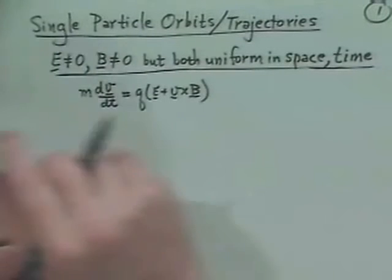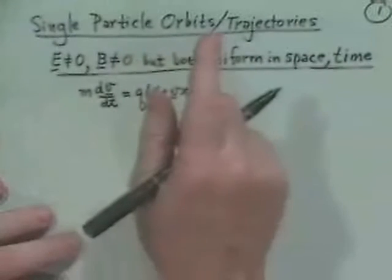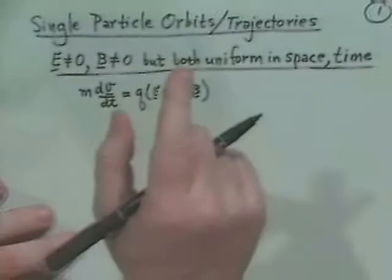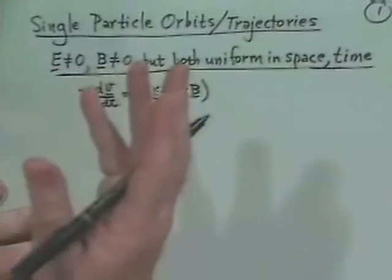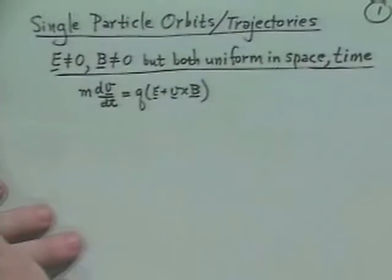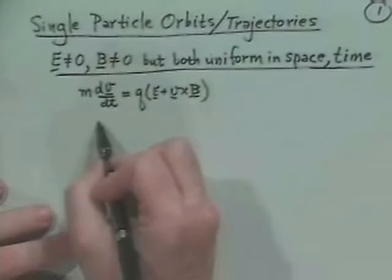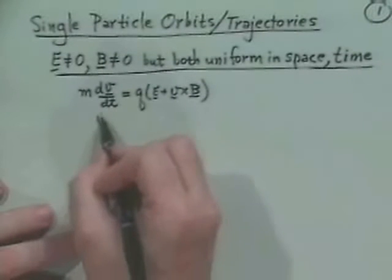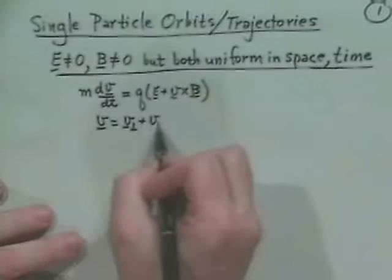When we were treating the magnetic field case, we found gyro motion perpendicular to the field, and parallel to the field we had just straight-line motion. We found it convenient to split into parallel and perpendicular to the field. So taking that as a guide, let's say our velocity is going to be V perpendicular plus V parallel.